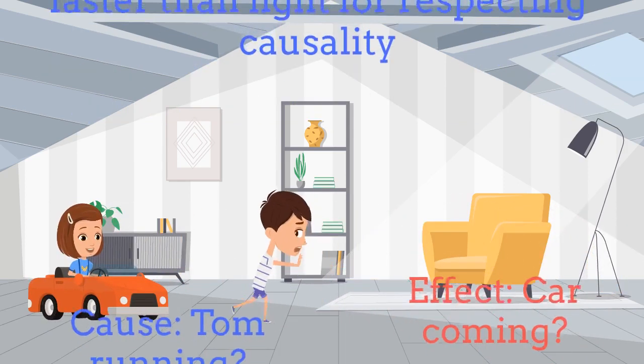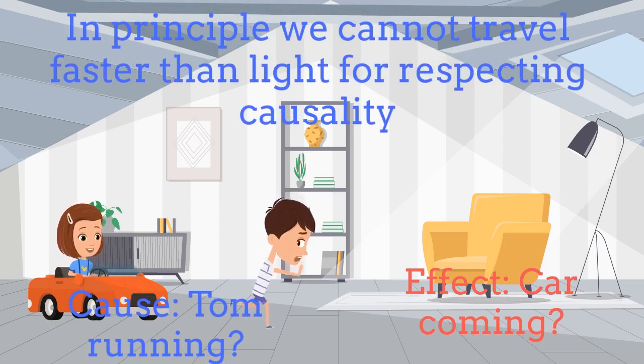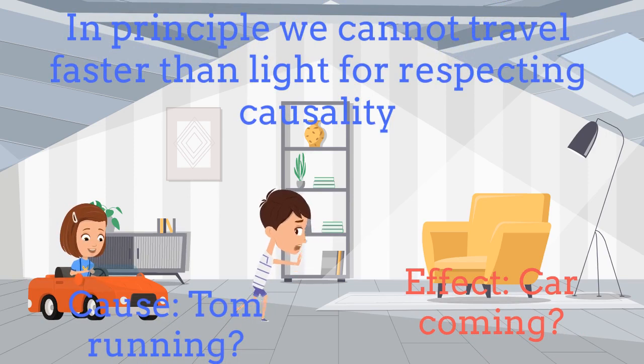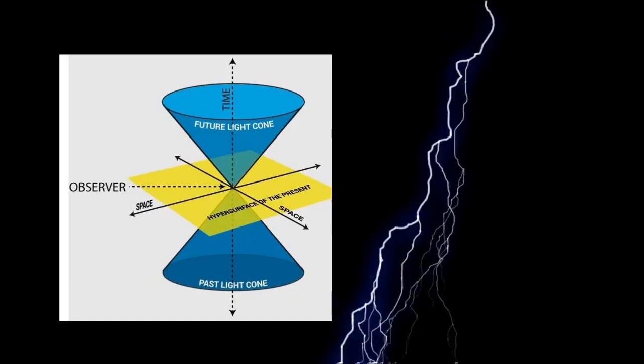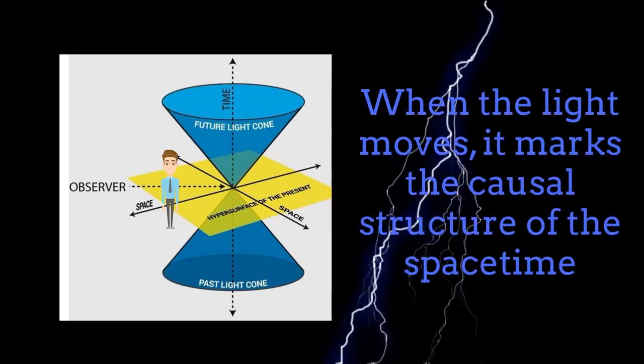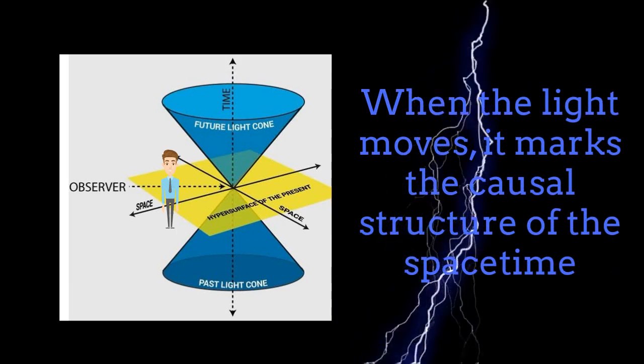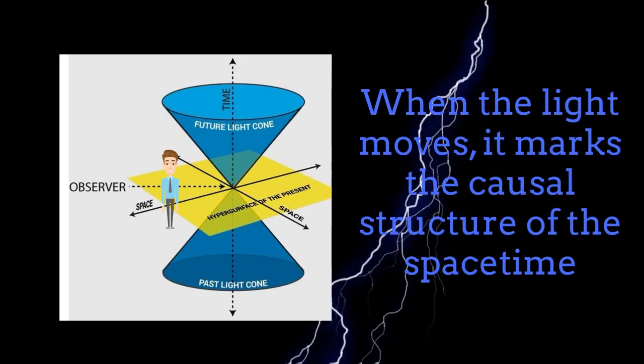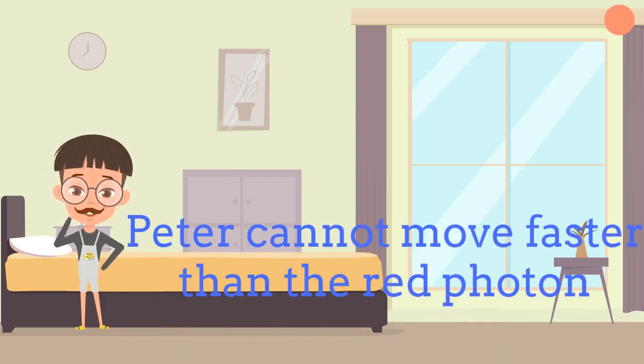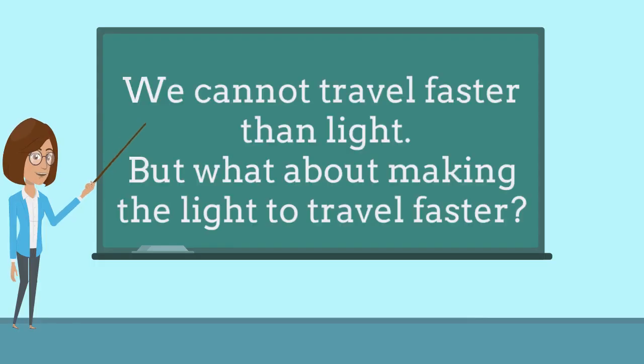In fact, if we could travel faster than light, then in some frames of references, some observers would perceive Tom running as the reason for the car coming to collide him. The light then defines the causal structure of the space-time, telling us what are our limits in terms of motion and communication. A red photon is moving. We cannot move faster than it. Indeed, the red light represented in this example with a single red photon marks our limits of causality. We cannot travel faster than light, and that's a fact.